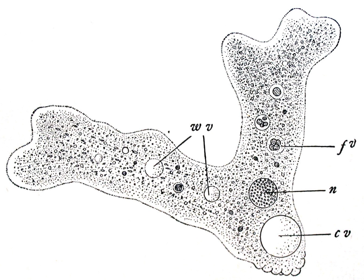A. proteus possesses a nucleus containing granular chromatin and is therefore a eukaryote. Its membrane is a phospholipid bilayer similar to other eukaryote organisms.